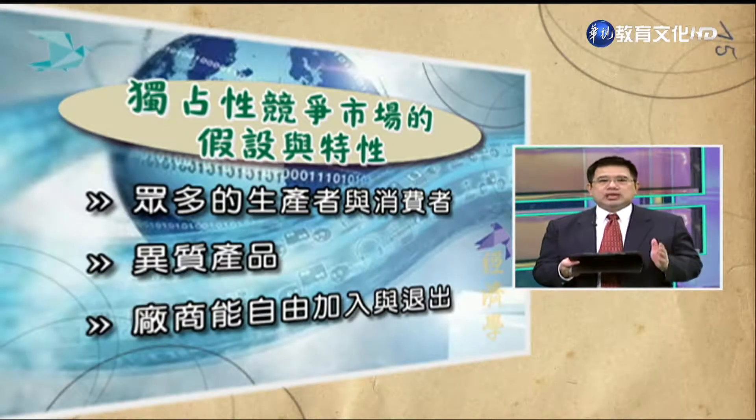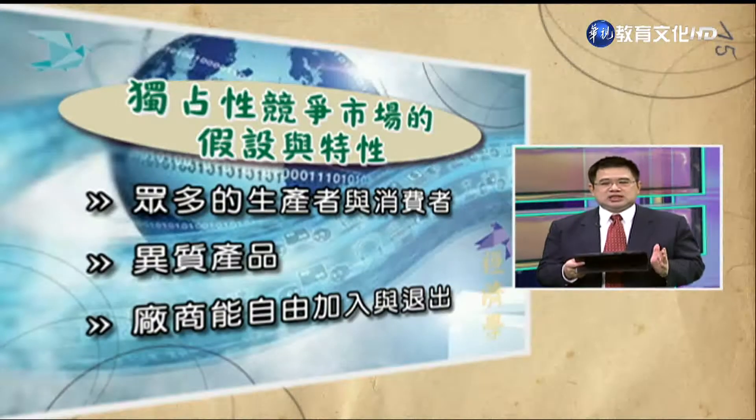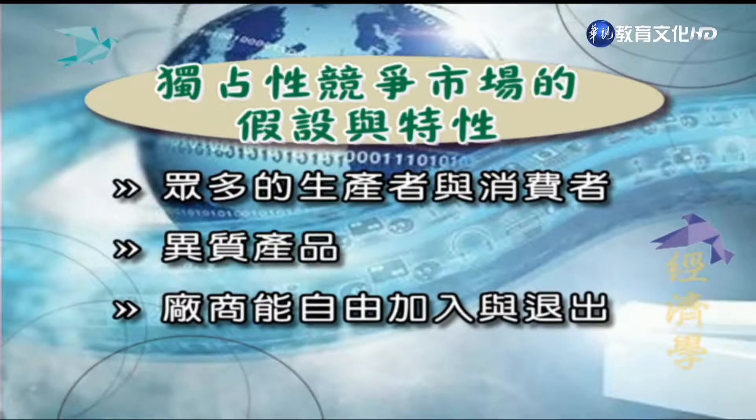把这些假设跟特性跟完全竞争或独占市场做比较，就可以了解为什么它称为独占性竞争市场。称为「竞争」的理由是生产者非常多，长期下可以自由进出；称为「独占」的理由是产品差异化，个别厂商因为产品差异化而有自己的粉丝，会面对自己忠实的需要者，类似独占者的状况。